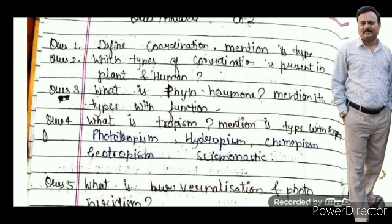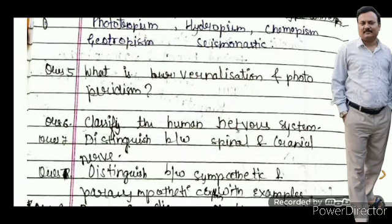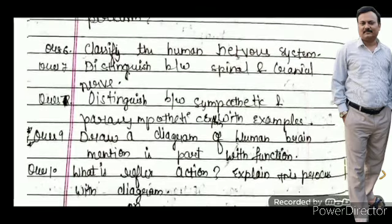Question number five: what is vernalization and photoperiodism? Question number six: classify the human nervous system. Question number seven: distinguish between spinal and cranial nerves. Question number eight: distinguish between sympathetic and parasympathetic nervous system with examples.